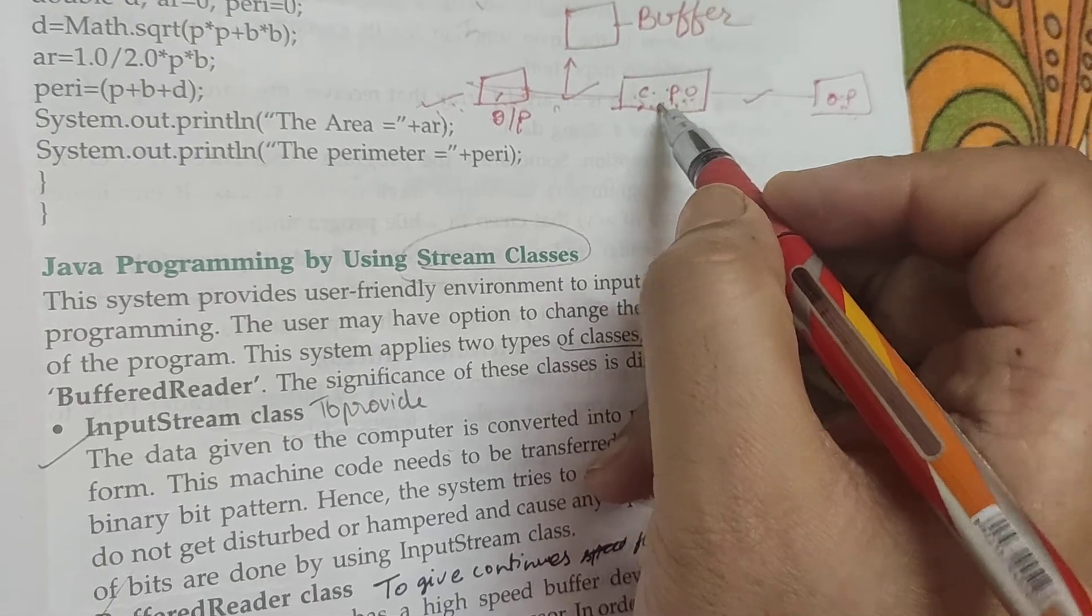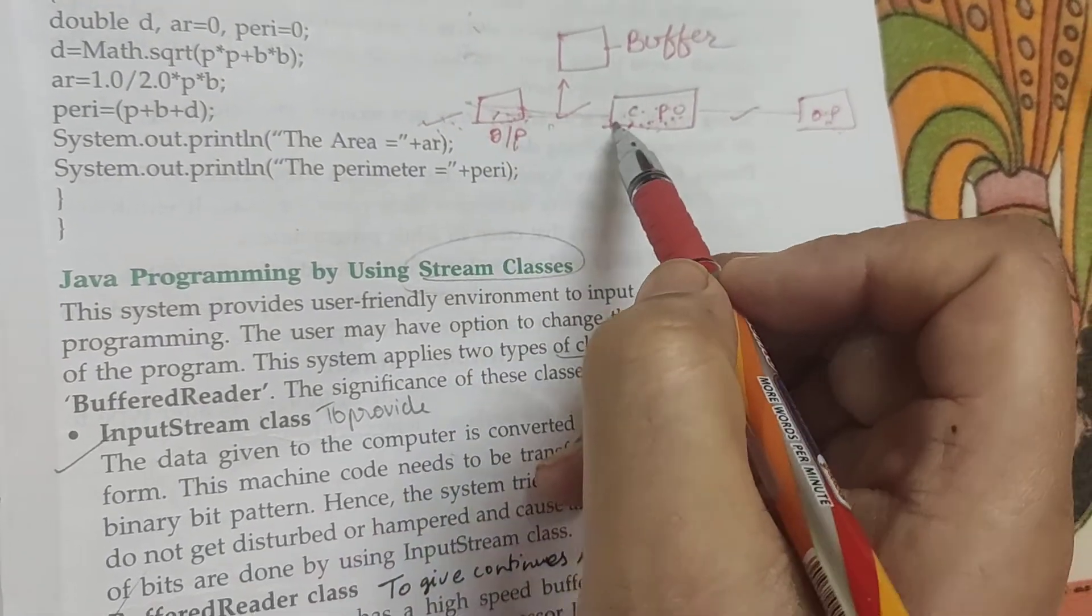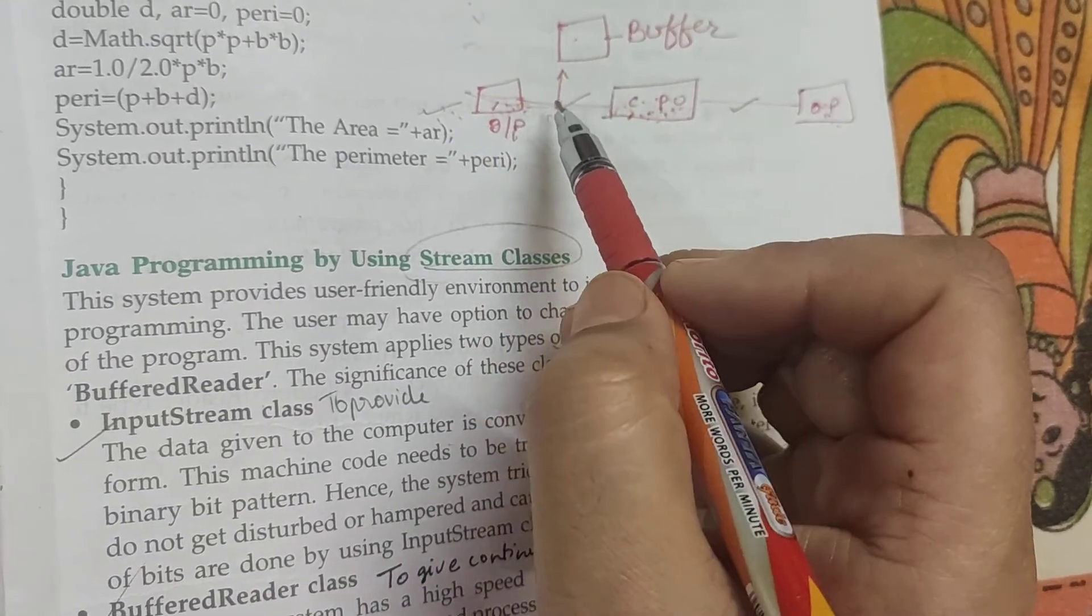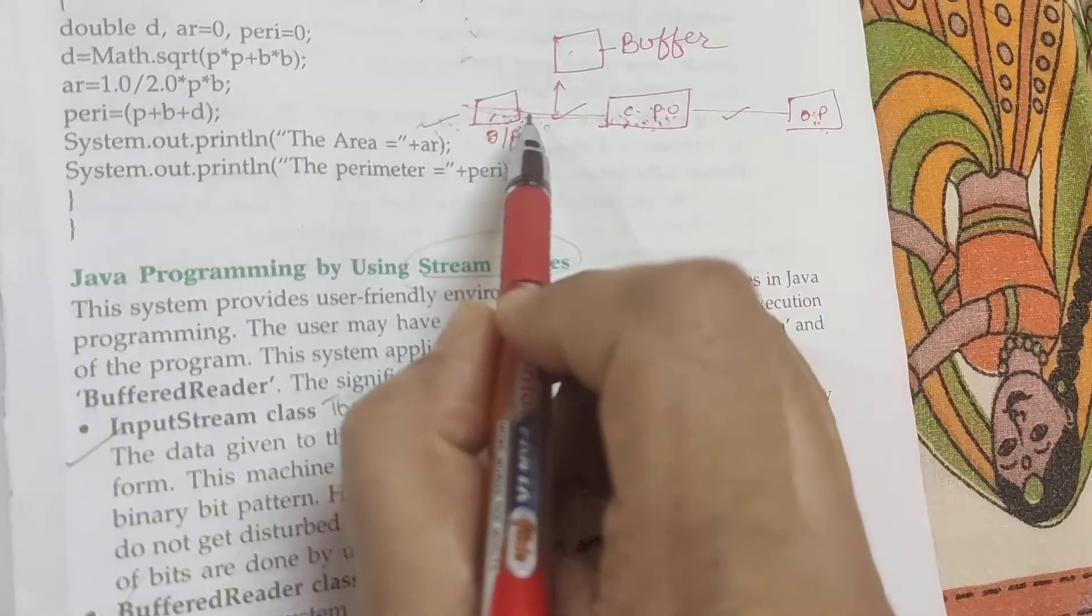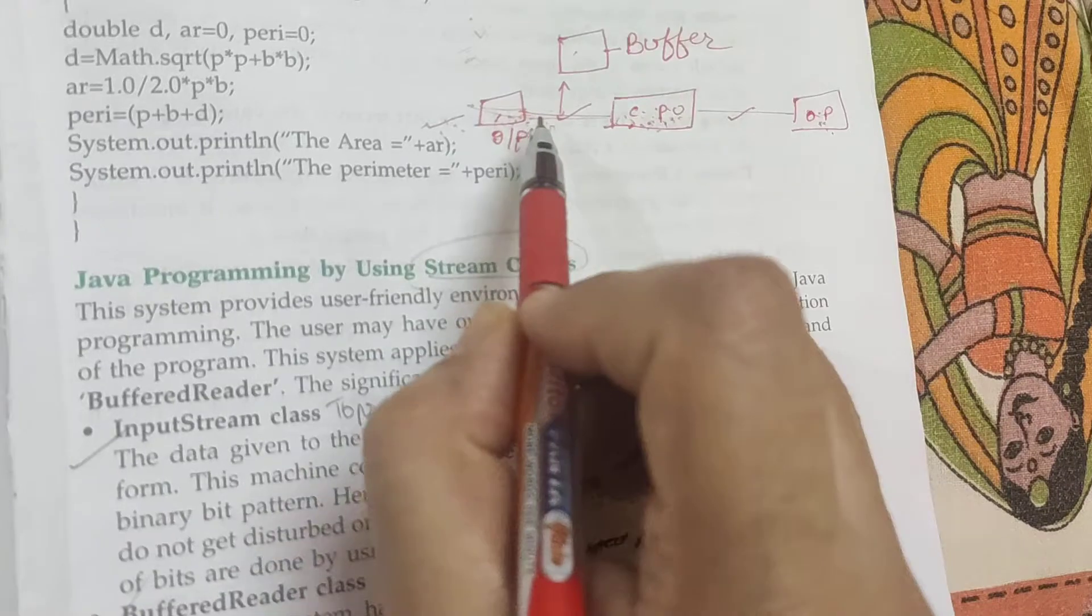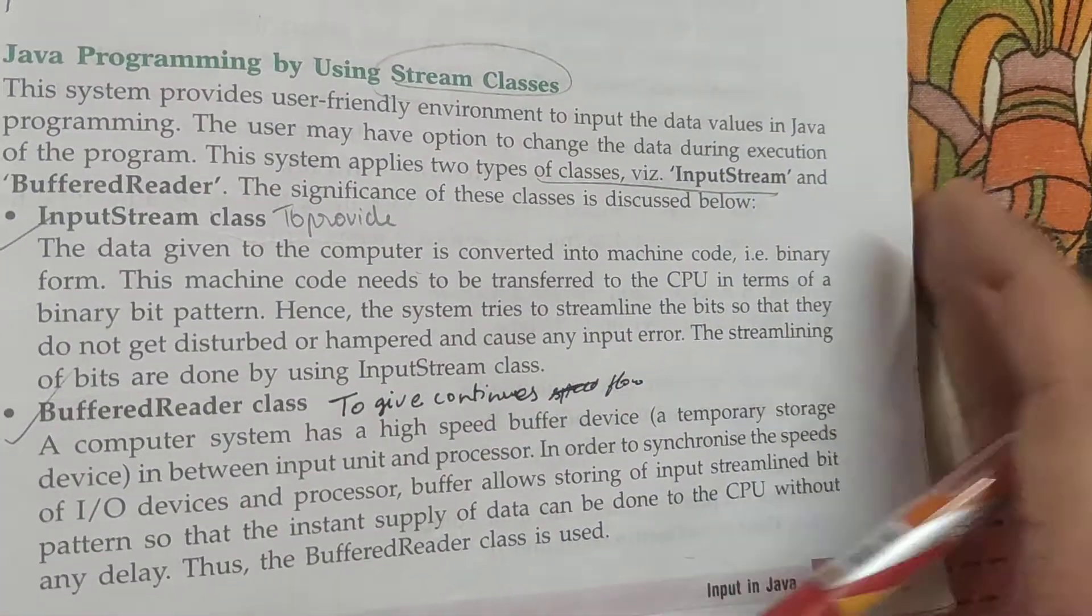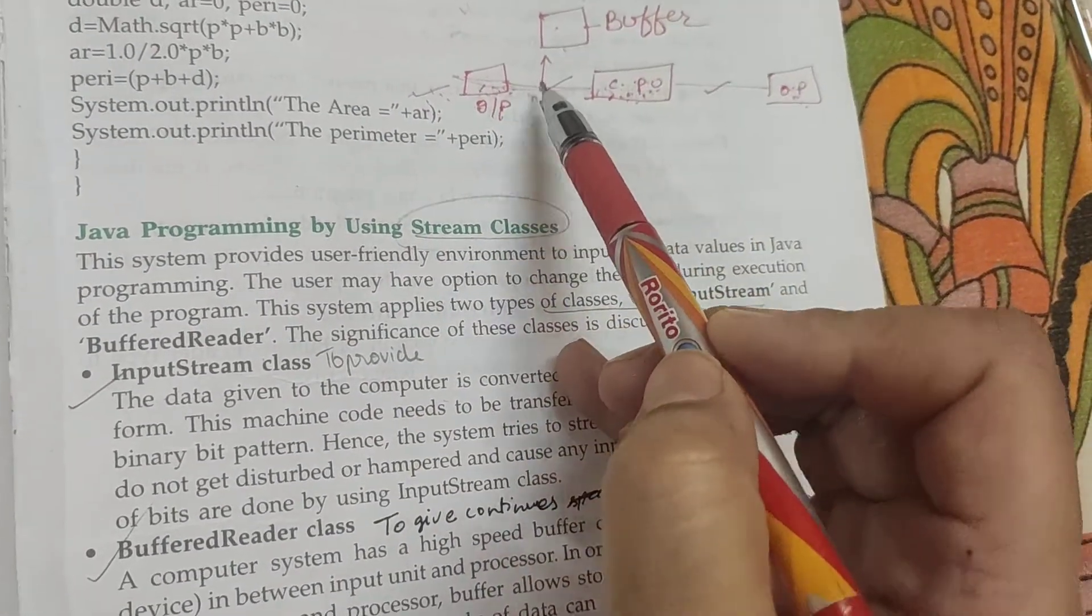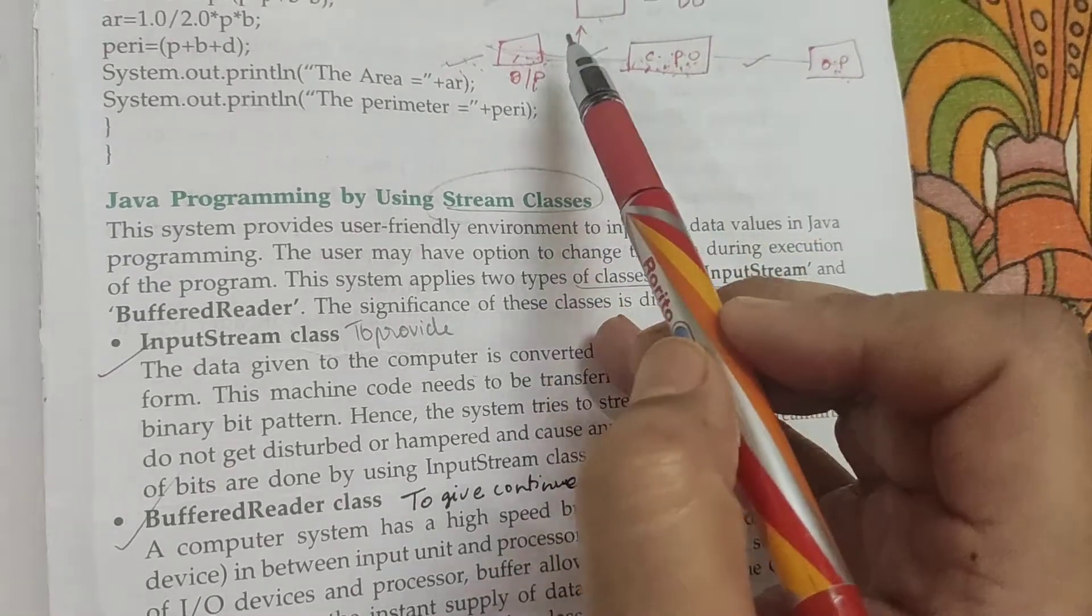And we cannot provide such speedy input to a processor, so sometimes our processor sits idle and it is a wastage of time. So in between these two - input and the CPU - we have a buffer. What does buffer do? Whenever we give input, it gets stored in the buffer, and a continuous flow goes to the CPU to keep working. So what is buffer? Buffer is actually an intermediate high speed device, temporary device between the input and the processor.